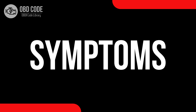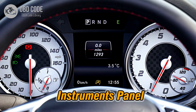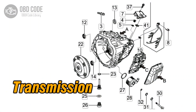Code symptoms P0218: 1. Transmission overheating warning light illuminated on the dashboard. 2. Transmission running hotter than normal. 3. Slipping or rough shifting in the transmission.